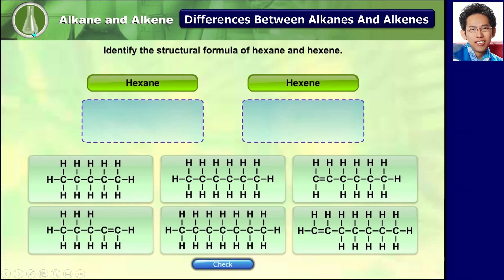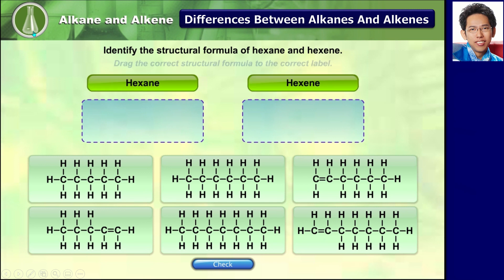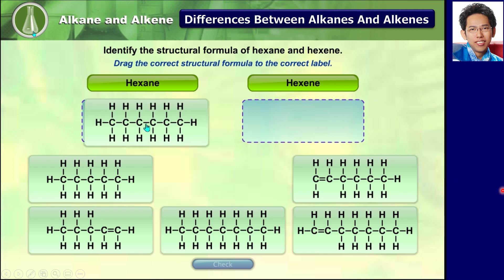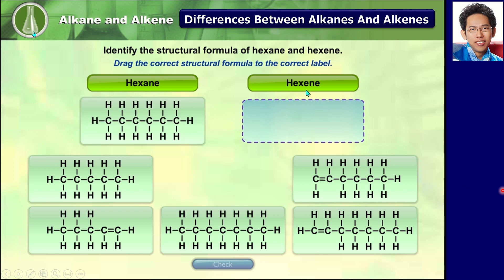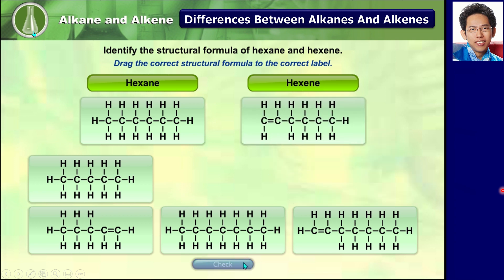Can you identify the structural formula of hexane and hexene? Drag the correct structural formula to the correct label. Hexane has six carbons with all single bonds. Hexene also has six carbons but with at least one double bond. Well done!